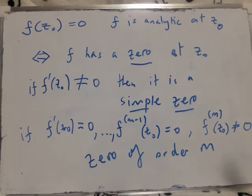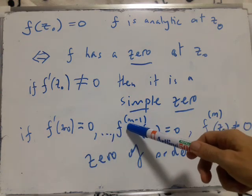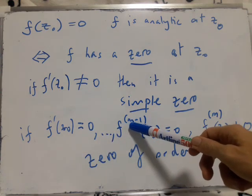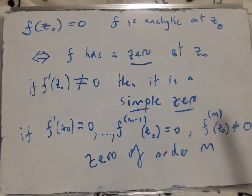So you can see that that follows. So when m equals 1, you've got the zeroth derivative, which is just the function itself, which is 0. The first derivative is not 0.